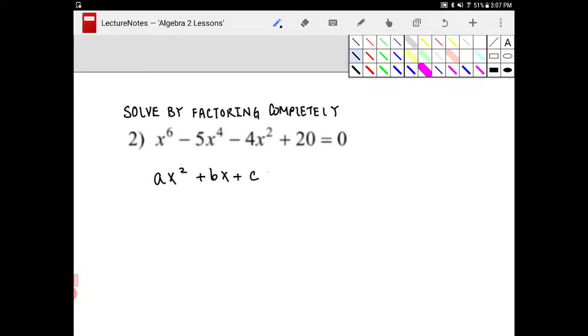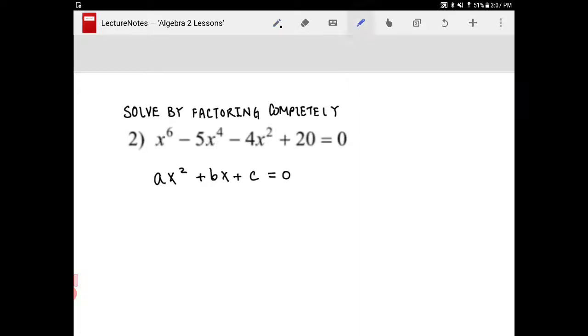Where it is either a trinomial or if the middle coefficient is zero, then it would be a binomial. In this case, this is neither one of those cases. So how are we going to be able to solve this by factoring?